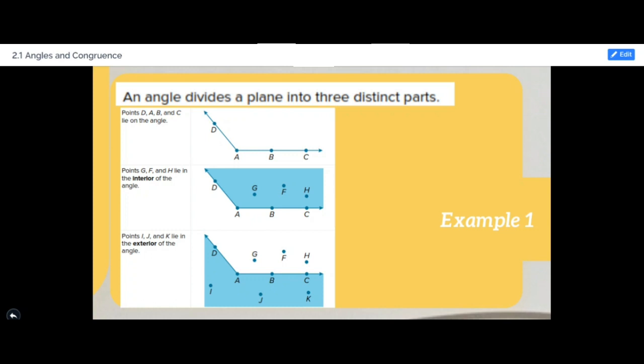An angle divides a plane into three distinct parts: points that lie on the angle, points that lie interior to the angle, and points that lie exterior of the angle.